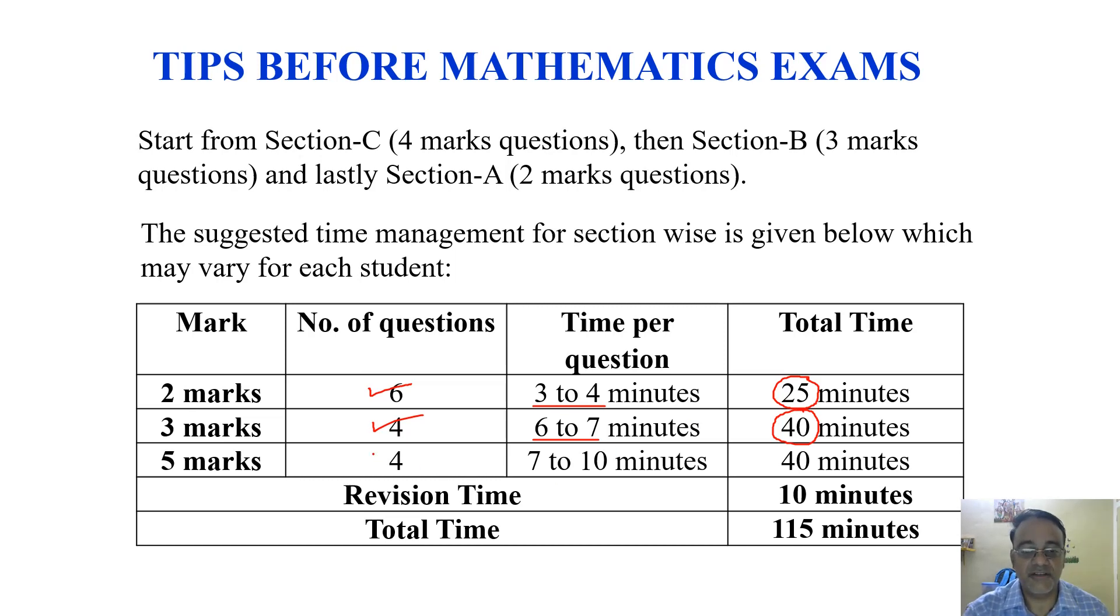Now the last section is section C which is four questions, two case study questions and I suggest the time is seven to ten minutes. So maximum 40 minutes. So 40 plus 40 plus 25 it will be 105 minutes and plus 10 minutes revision time. So the paper should be completed in 115 minutes.